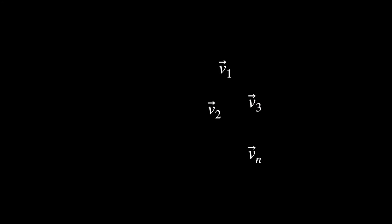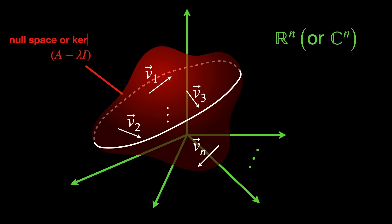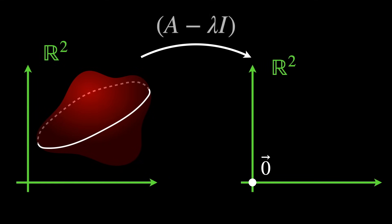These eigenvectors live in a subspace of Rn, or Cn, if we are studying the complex case. The subspace is called the null space, or kernel of the matrix A-lambda i. The kernel can also be seen as a space that has all its vectors mapped to the null vector, by the mapping A-lambda i.